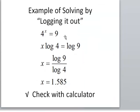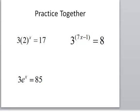Here's an example: 4 to the x equals 9. I'm going to take the log of both sides. When I do that, the exponent x comes down in the front — that's 'logging it out.' Then I divide both sides by the log of 4 and do that calculation in my calculator. There's a really cool way to check this too.